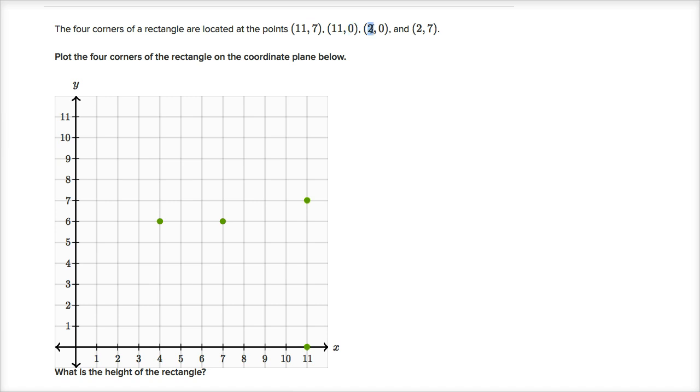All right, then we have (2, 0). So x-coordinate is two, and we don't move up at all. So we're going to sit on the x-axis. We move two to the right and zero up.